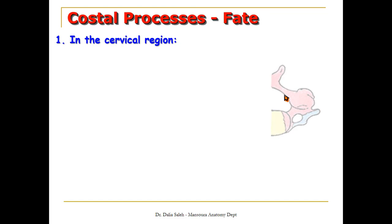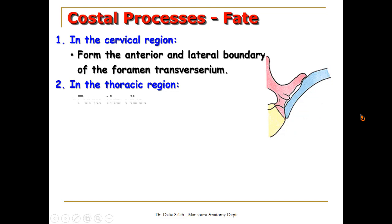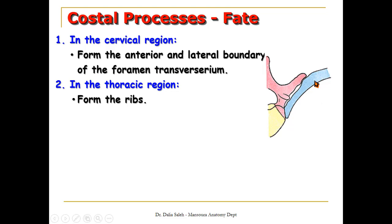What about the costal process at various regions? In the cervical region, the costal process fuses with the transverse process and forms the anterior and lateral boundary of the foramen transversarium. In the thoracic region, the costal process elongates and forms the ribs. The transverse process is shown in pink while the costal process is shown in blue in the diagram.